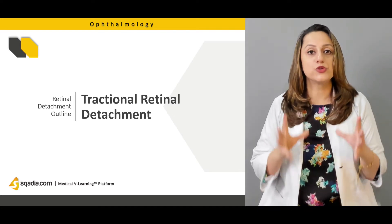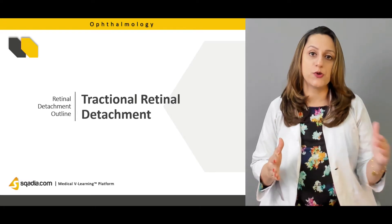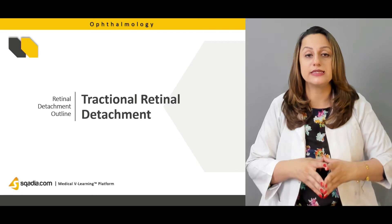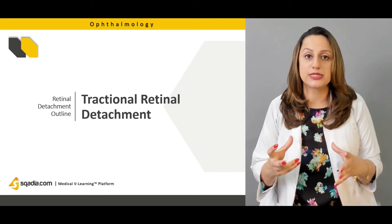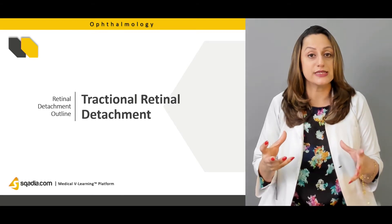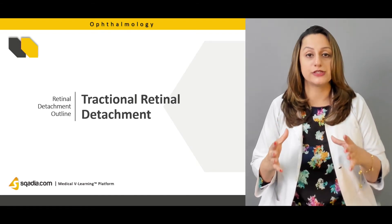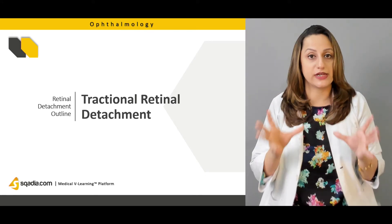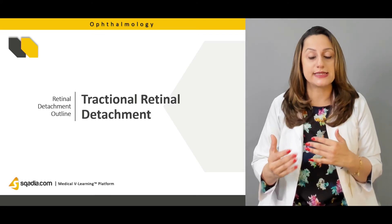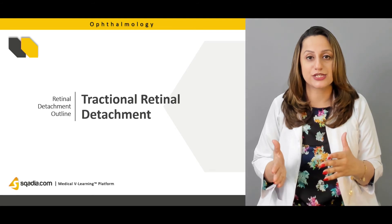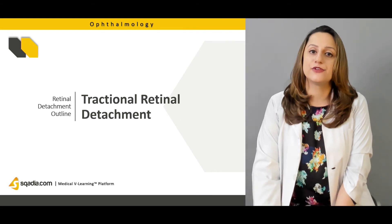The third and most important category is tractional retinal detachment. Sometimes a predisposed retina is subject to tractional forces — such as fibrovascular tissues — that are responsible for the final clinical presentation of retinal detachment. The signs, symptomatology, and management guidelines related to these tractional forces will be discussed for these patients.